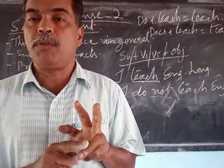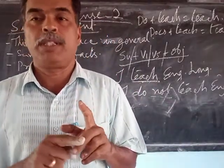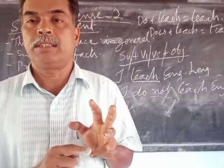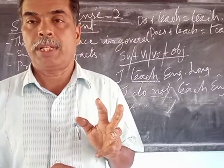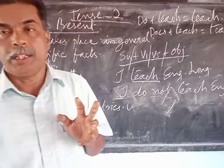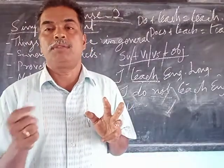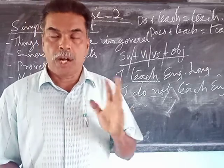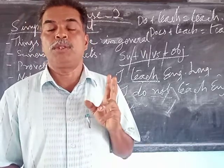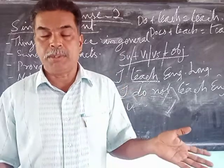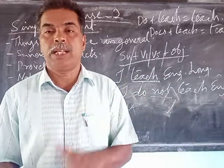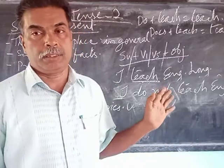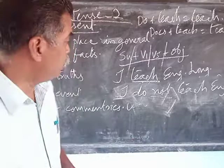So to summarize: the sentence structure is Subject + V1 or V5 form of the verb + Object. For the question form, place 'do' or 'does' before the subject. For the negative form, add 'not' after 'do' or 'does.' You get this by splitting the action word into 'do + action word' or 'does + action word' — V1 form of the verb.